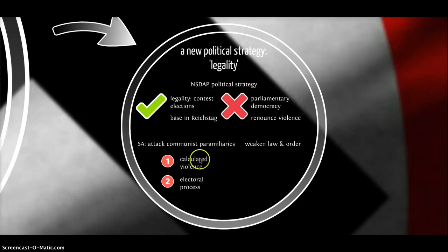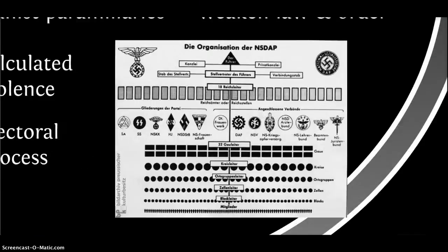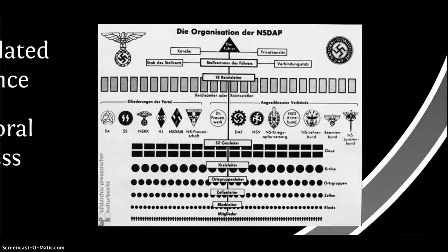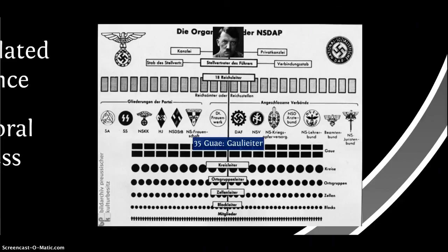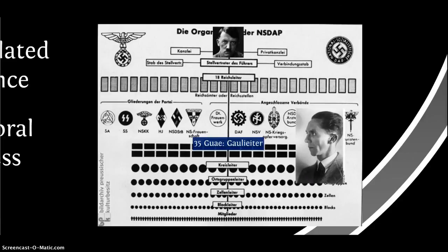It was a two-pronged strategy: calculated violence alongside engagement through propaganda in the electoral process. After 1926 and the Bamberg Conference, the party was also reorganised, dividing Germany into 35 GAU — regions roughly corresponding to Germany's districts — each led by a Gauleiter. This was a national strategy to move beyond the base in Bavaria and gain support across Germany. Hitler, under the Führer Principle, remained absolute dictator at the top. A very significant Gauleiter was Josef Goebbels, who became Gauleiter of Berlin.